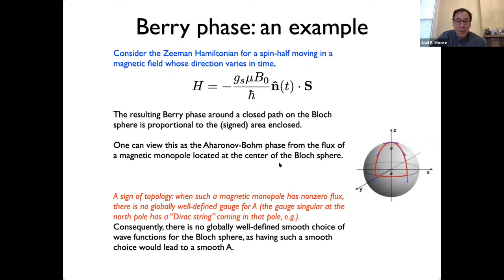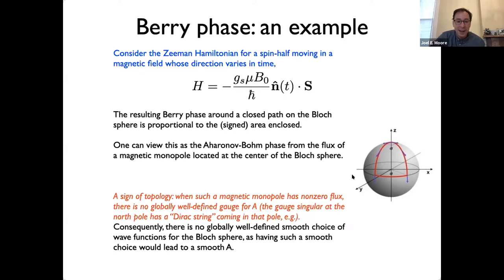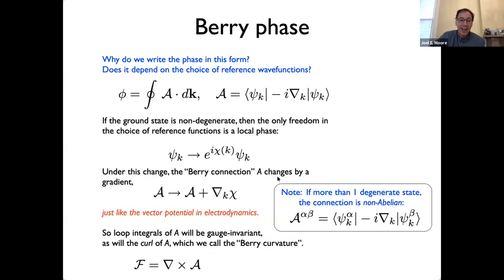The adiabatic theorem in quantum mechanics is only a piece of the story. If you have a slowly evolving Hamiltonian and a non-degenerate state, you'll remain in that state. But if you take the Hamiltonian slowly around a closed loop in parameter space, you'll actually build up a measurable phase — the Berry phase φ — written as an integral along the path of an object made from the wave function at each parameter value.